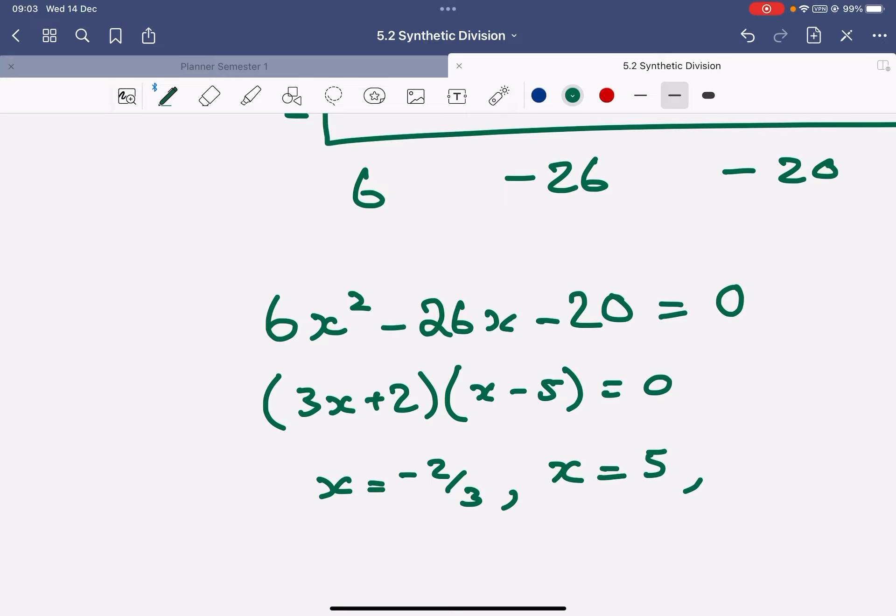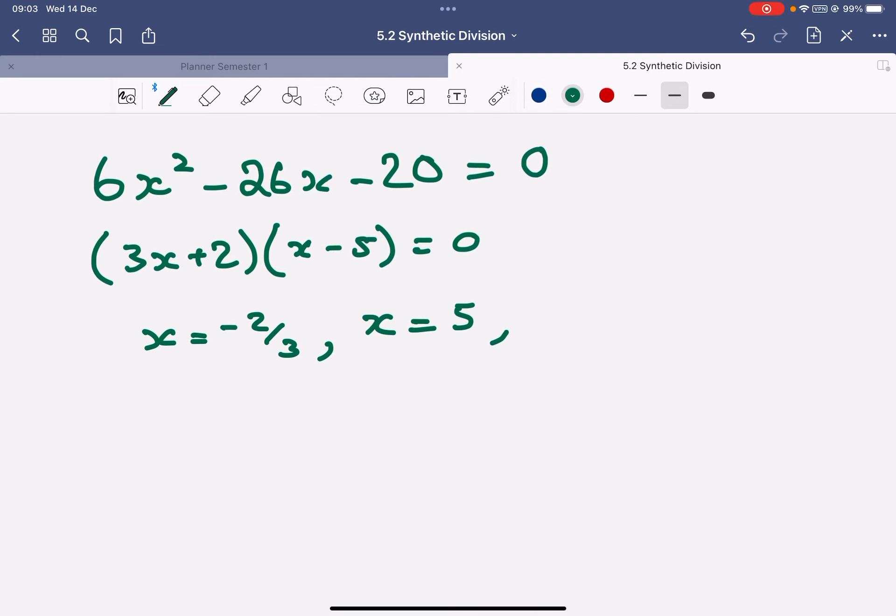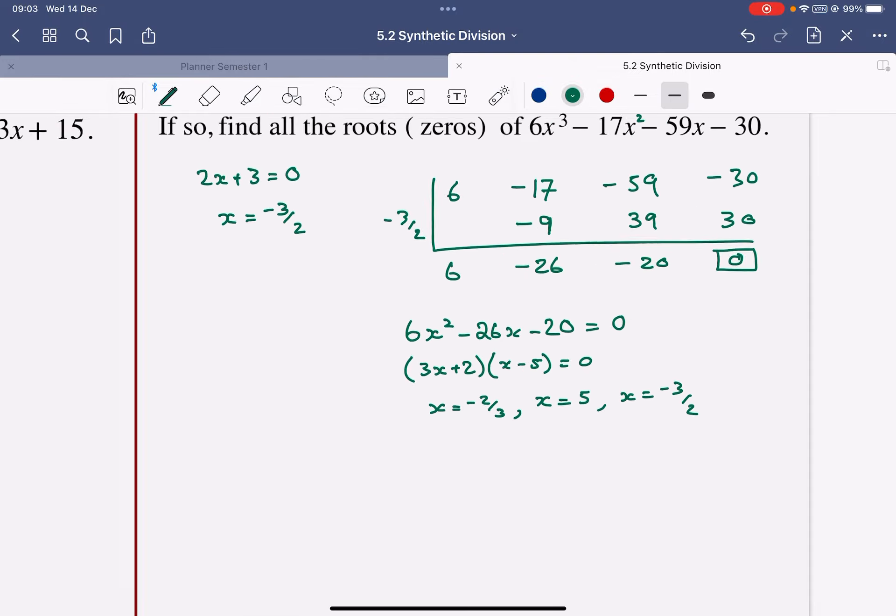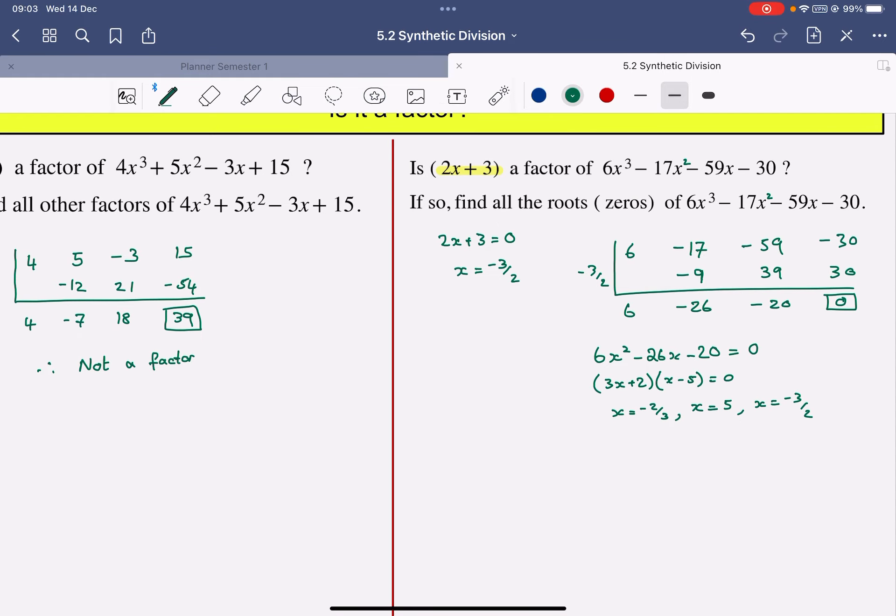And we had the first factor given to us in the question. So the 0 is negative 3 over 2 as the final 0. So if you're looking for 0s, you're looking for when it's equal to 0. If you're just looking for factors, they're the ones that divide in.